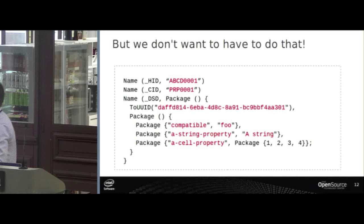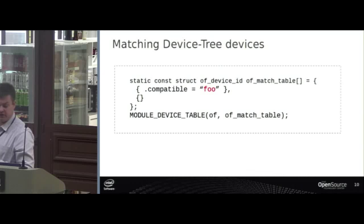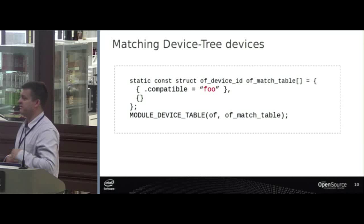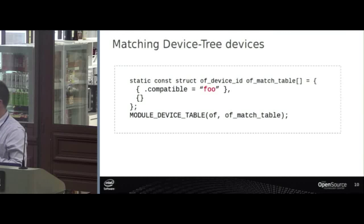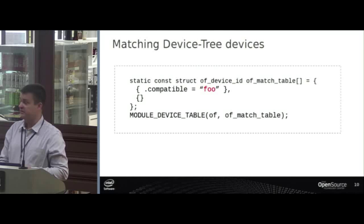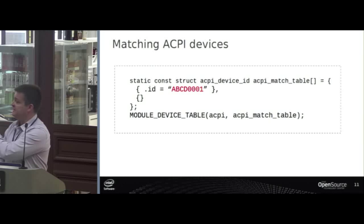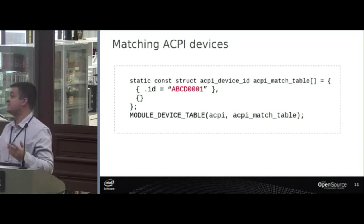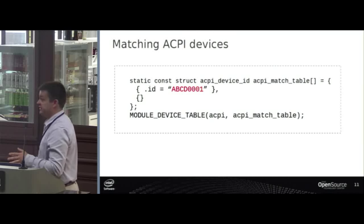There are device drivers that do both — you can have both device tree and ACPI matching. To take an existing device tree driver and make it match against an ACPI device, you would be adding the ACPI table rather than replacing it or making a new driver. But we don't want to have to do that — we want to be able to do this without touching the drivers at all.